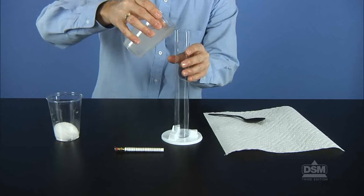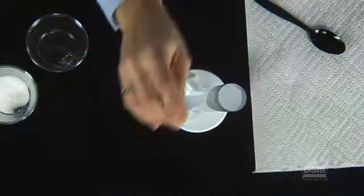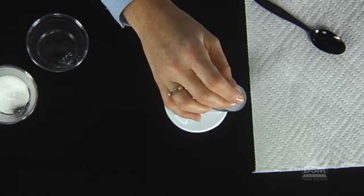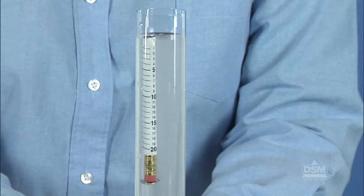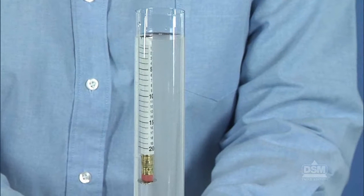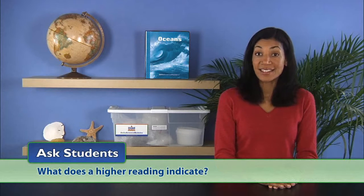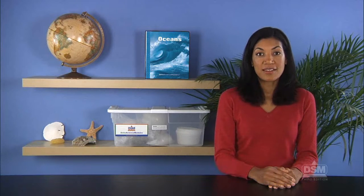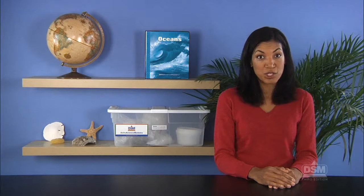Pour this salt water sample back into the tube. Drop in the hydrometer and read the level at which it is floating. The level should be higher than that of the fresh water. Ask students what a higher reading indicates, and help them understand that the higher reading indicates that salt water is denser than fresh water.